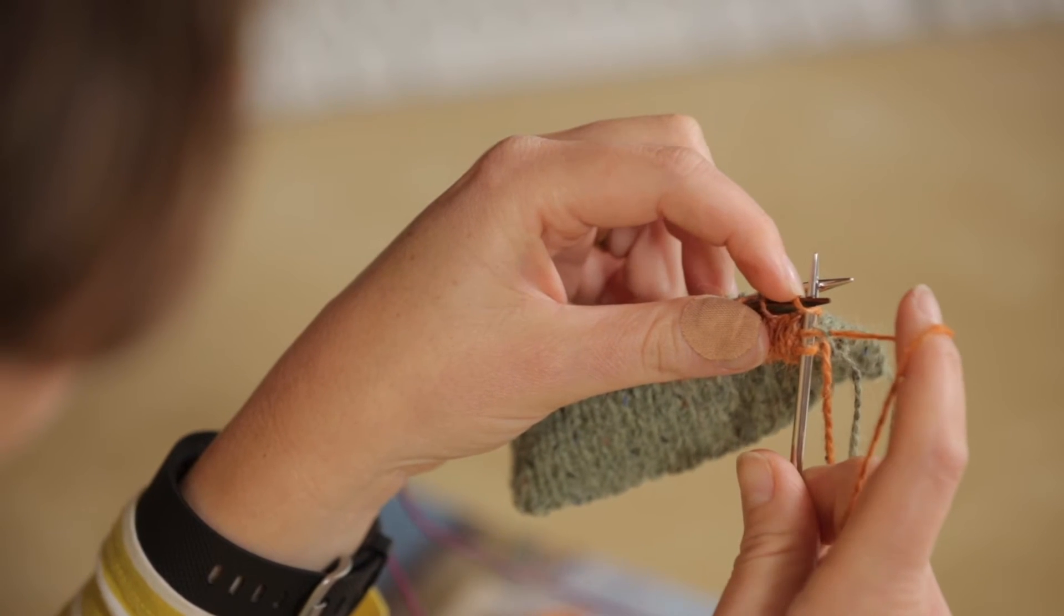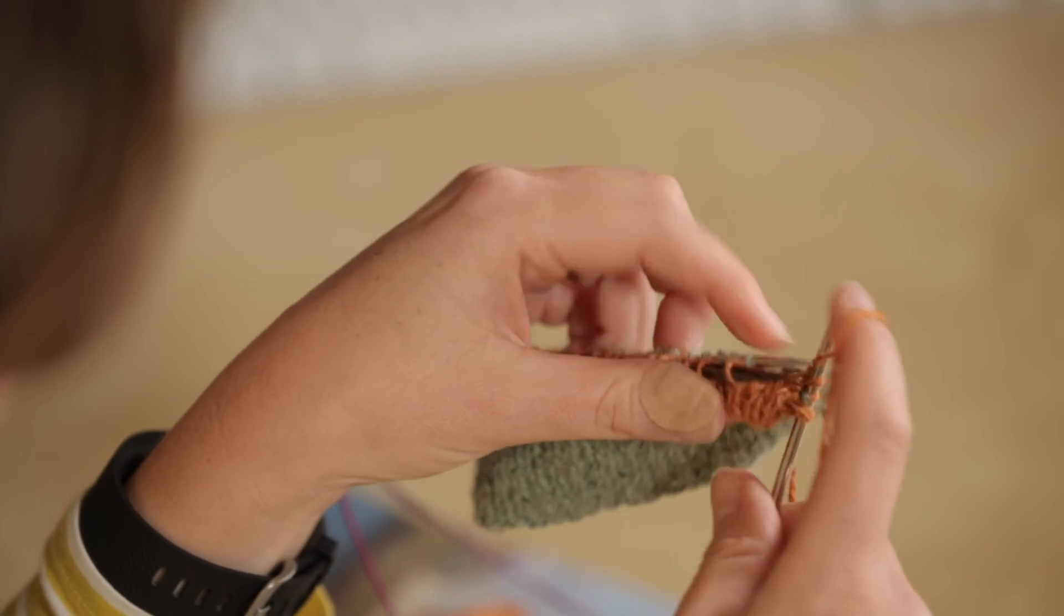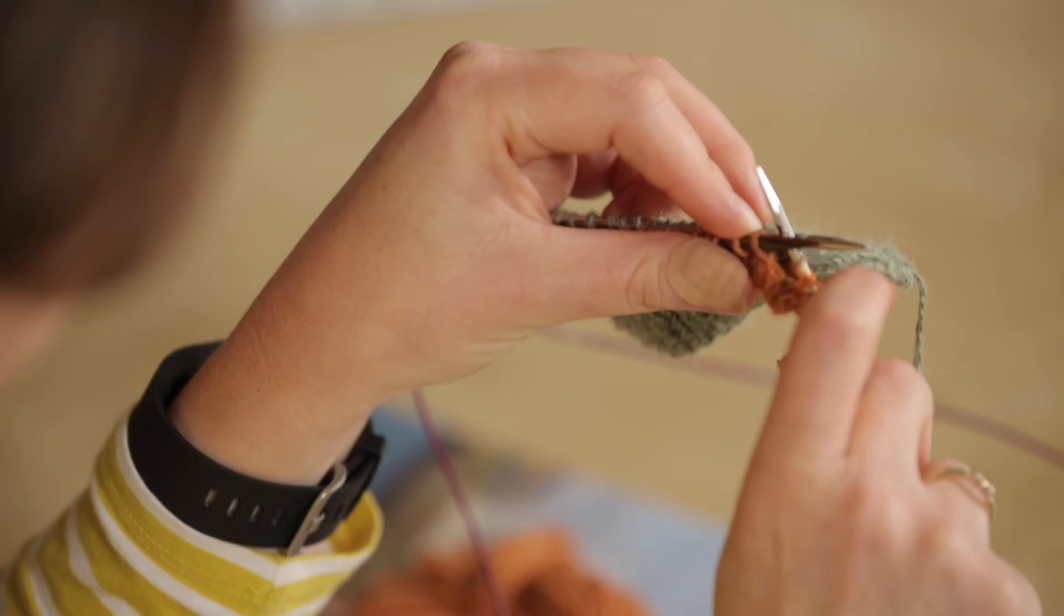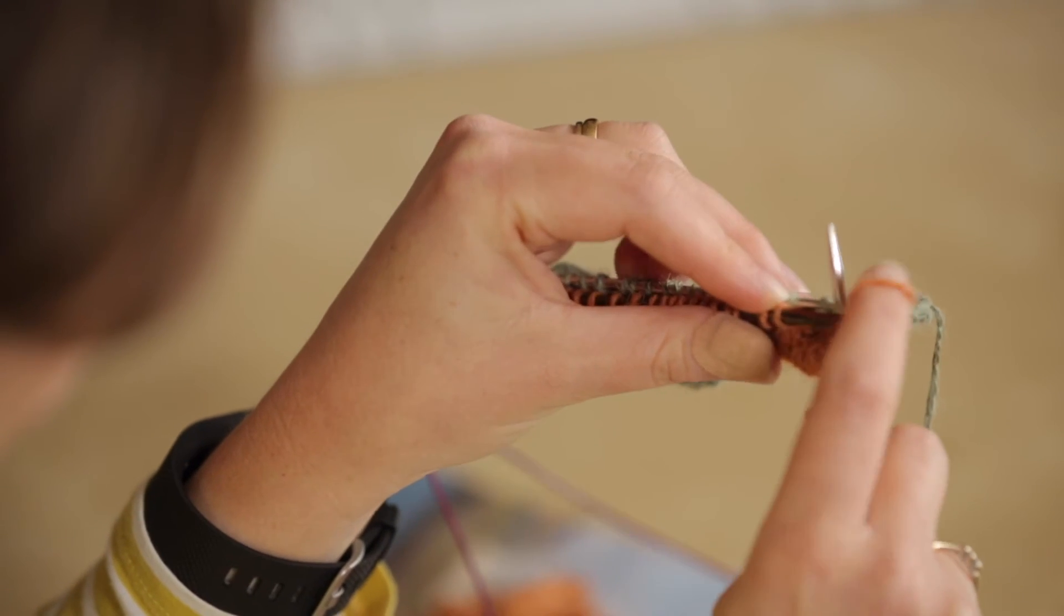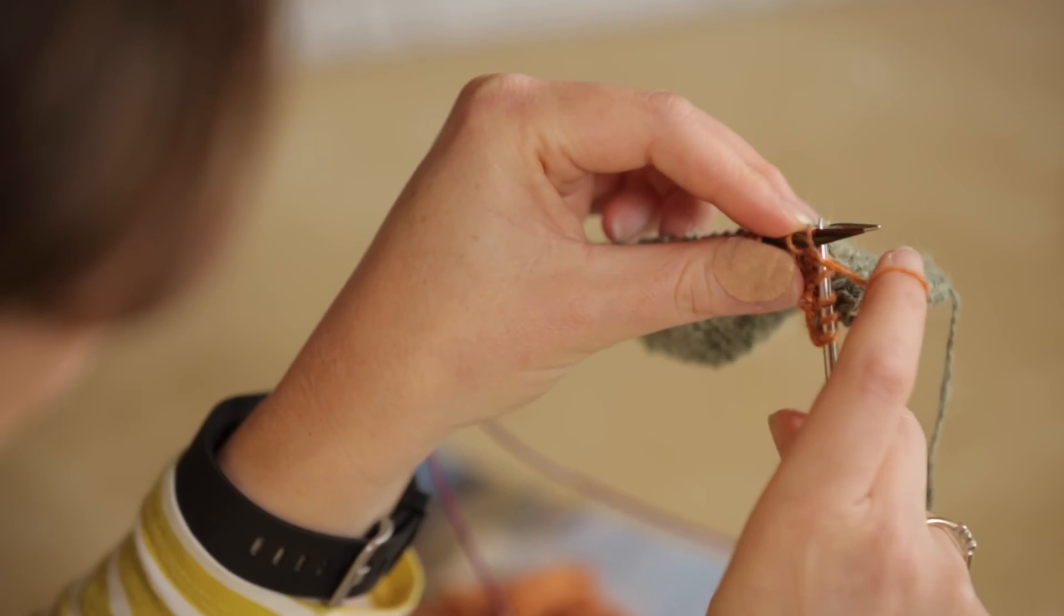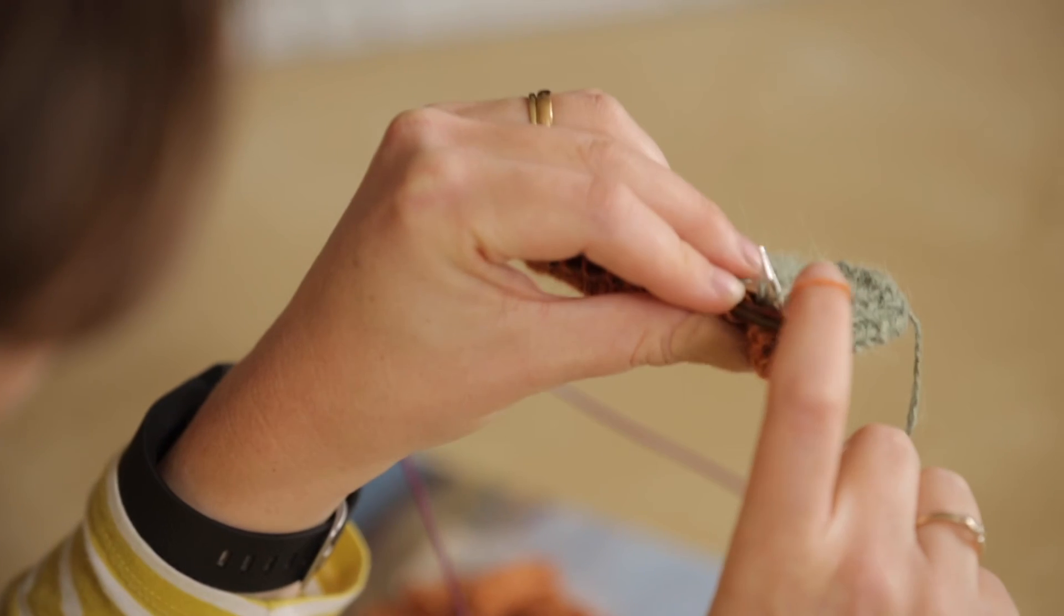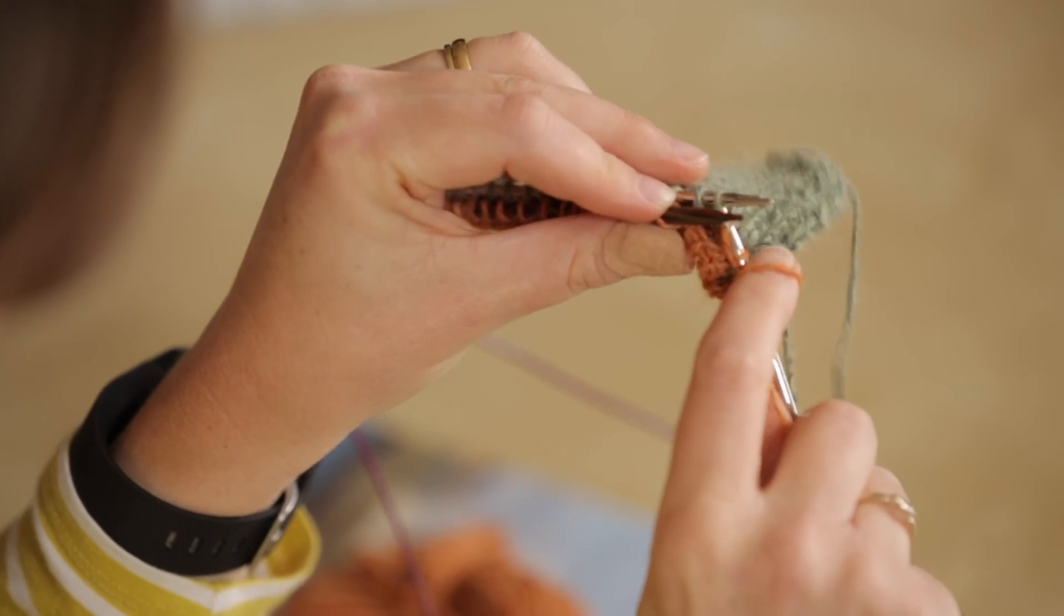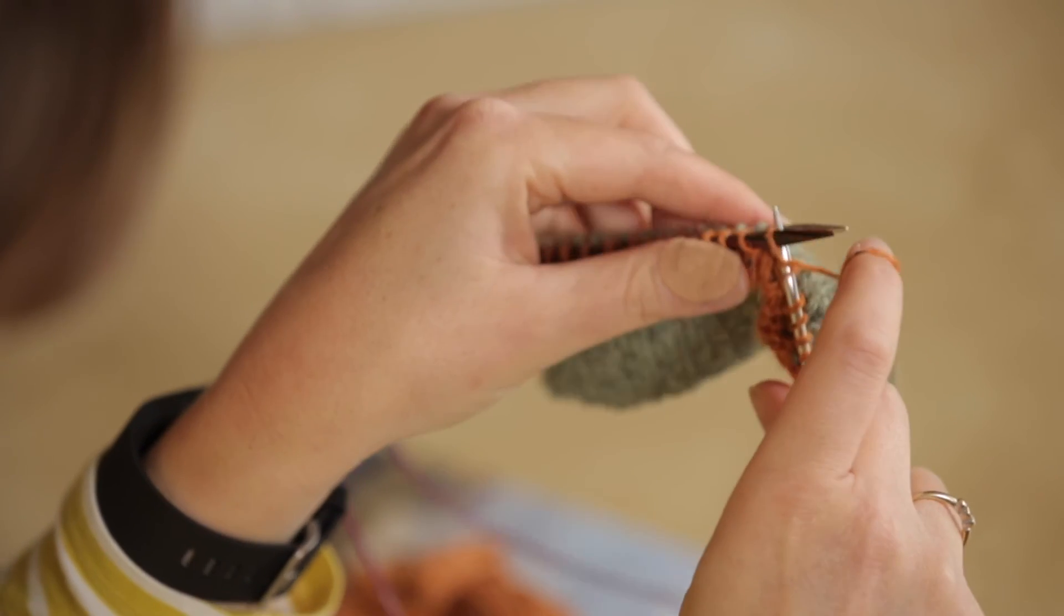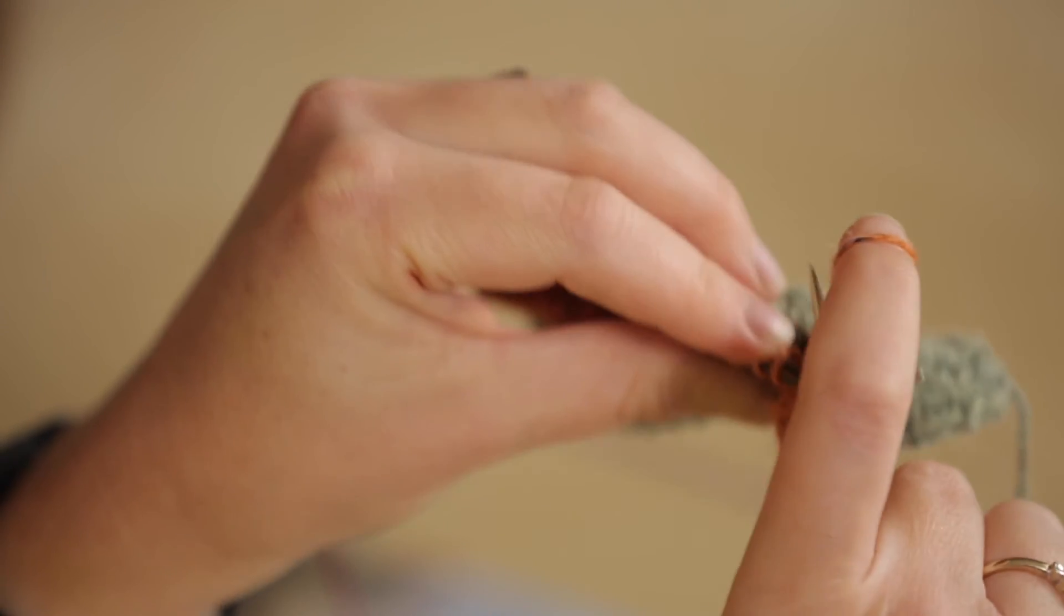We're then going to knit the front stitch and purl the rear stitch, and that's all there is to it. We work across the row in this way, taking the alternate stitches from the front and from the back.